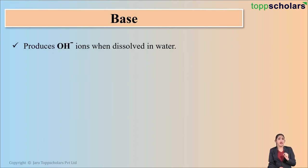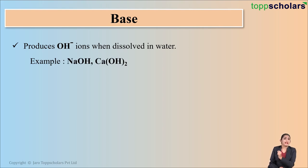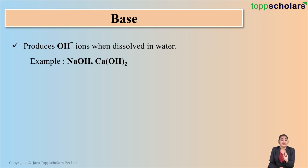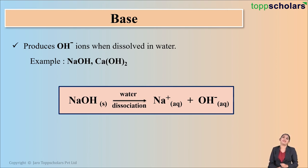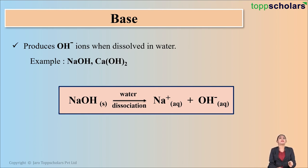What about bases? Bases are those substances which on dissolving in water give you OH- ions. For example, NaOH that is sodium hydroxide, and Ca(OH)2 that is calcium hydroxide. Both these substances, when dissolved in water, dissociate and give OH- ions. If I take NaOH and dissolve it in water, NaOH dissociates and gives you Na+ ion and OH- ions. Since according to Arrhenius theory, a base is a substance which produces OH- ions when dissolved in water.